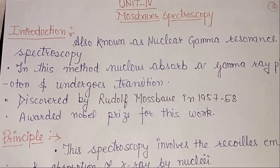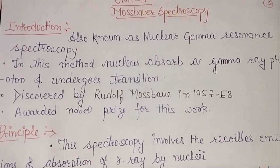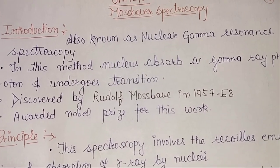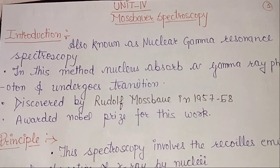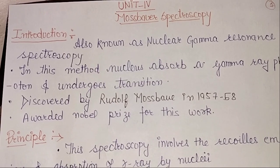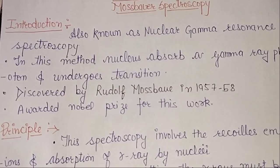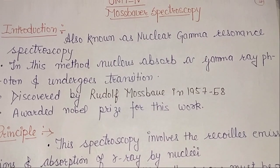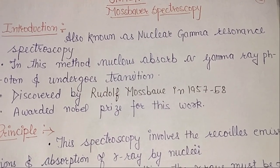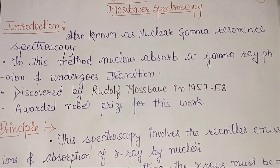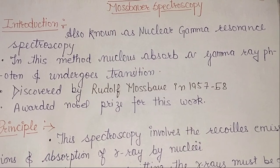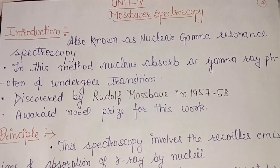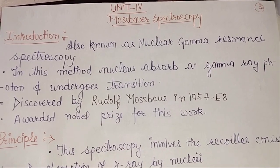Mossbauer spectroscopy is also important for BSC students. If we talk about the introduction part, it is also known as Nuclear Gamma Resonance Spectroscopy. In this method, nuclei absorb gamma ray photons and undergo transition. This spectroscopy was discovered by Rudolf Mossbauer in 1957-58, and he was awarded the Nobel Prize for this work. So this is the simple and basic introduction of Mossbauer spectroscopy.